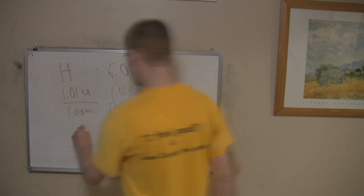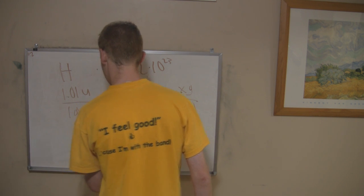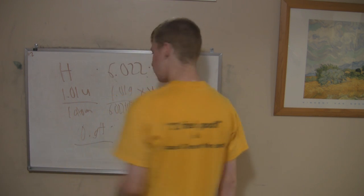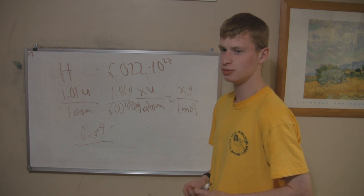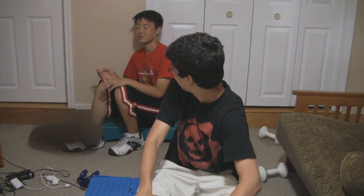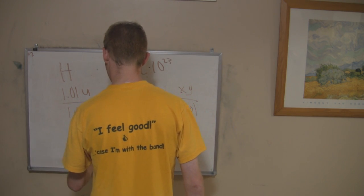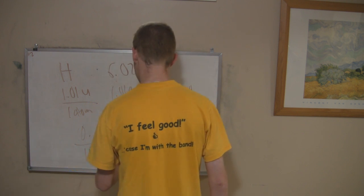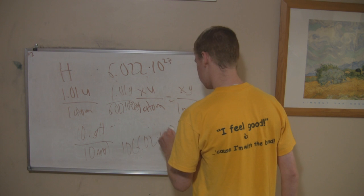So if you have 10 grams of hydrogen, then how many atoms are you going to have? Or how many moles of atoms are you going to have? James? Oh, 10 moles? That's correct. You're going to have 10 moles, or 10 times 6.02 times 10 to the 23rd.